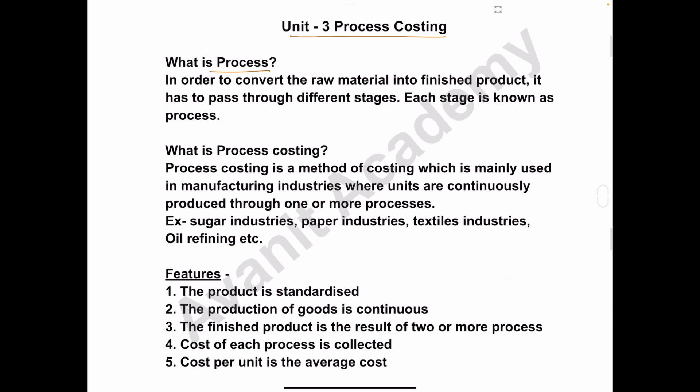To produce sugar, first they have to buy the sugarcane. The sugarcane will be converted into juice. This juice will be purified, and according to the quality of the juice, the sugar will be produced. So to get the final product, that is sugar, the raw material has to be passed through different stages or different processes, and each stage is called a process.